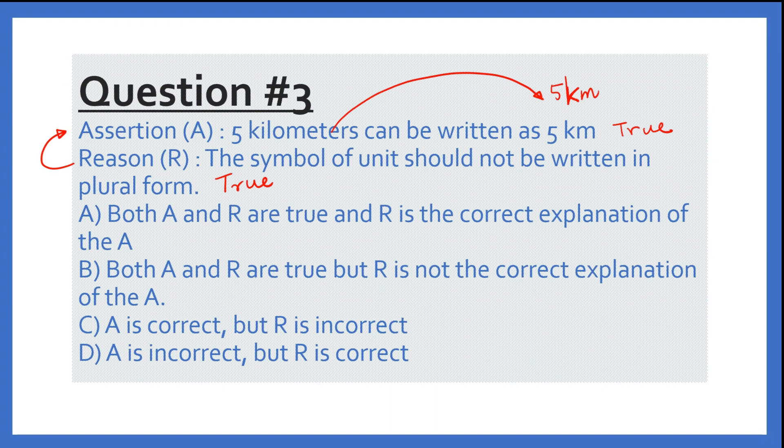So now see the four options. Four options are: A, both A and R are true and R is correct explanation of A. B, both A and R are true but R is not correct explanation of A. C, A is correct but R is incorrect. D, A is incorrect, R is correct. So four options are there. Which one is the correct one? The correct one is A. So those are the questions.